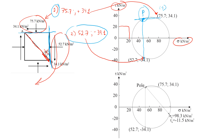With the pole found, we can now determine stresses acting on plane AB. We don't need to look at the angle — we simply use a ruler and draw a line from pole P parallel to AB, then find where this line crosses the circle. Reading the coordinates from the graph — which is why having the correct scale is very important — the normal stress acting on plane AB is 98.3 kN/m², and the shear stress is negative at −11.5 kN/m².